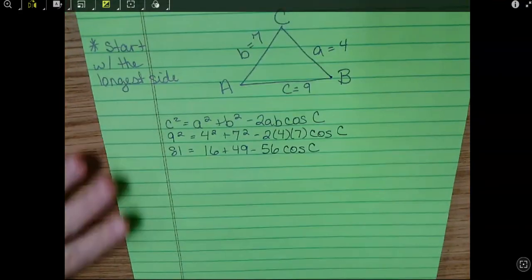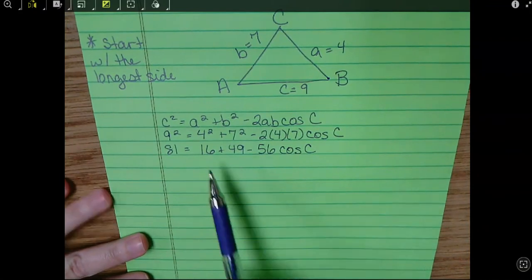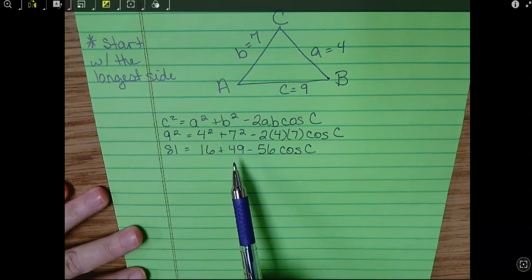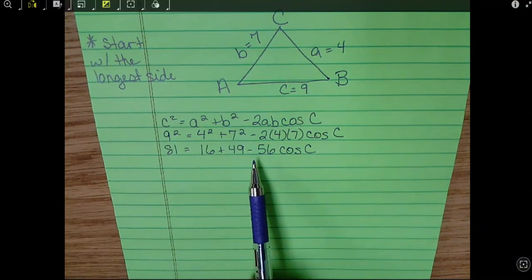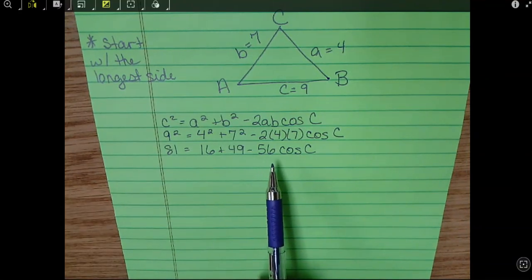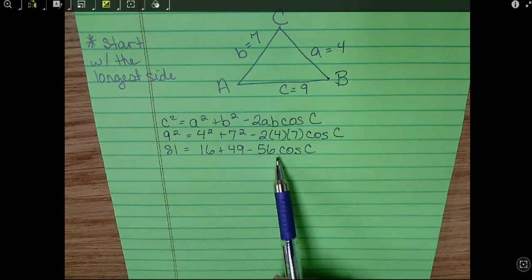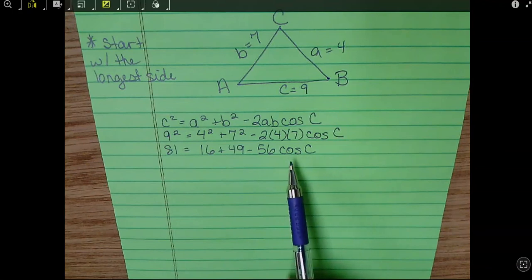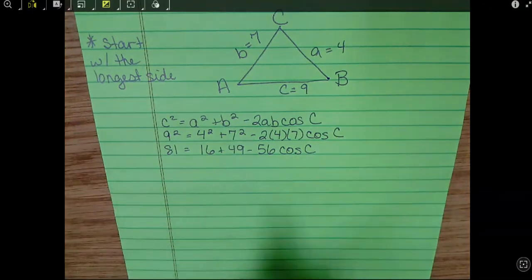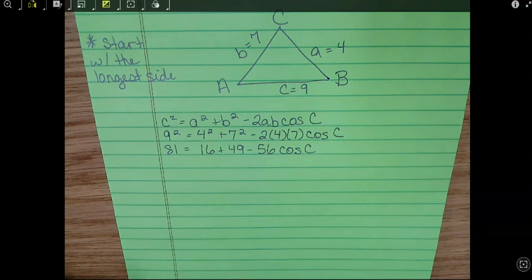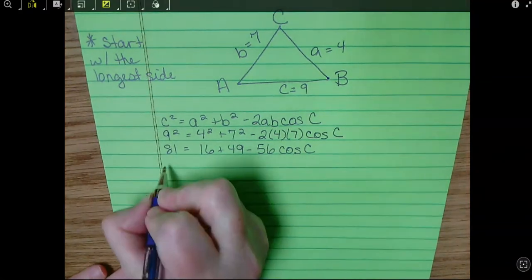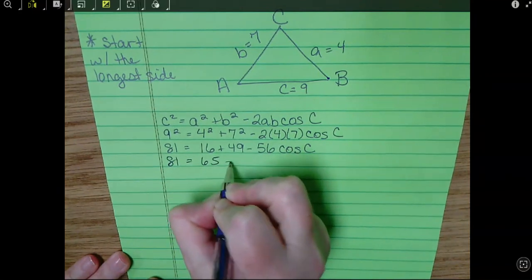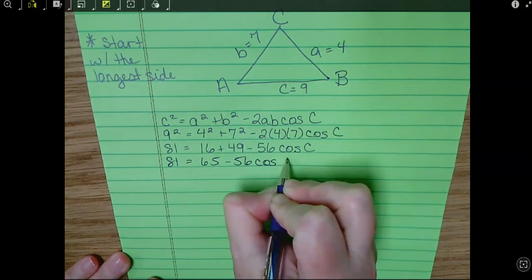Okay, now here you want to be very careful. I can add 16 and 49 together, but there's going to be a part of you who's going to die and want to subtract 56, but we can't. This 56 is attached to this cosine C. And because this has stuff attached to it, we can't deal with it. Okay, so I'm only going to add 16 and 49 together.